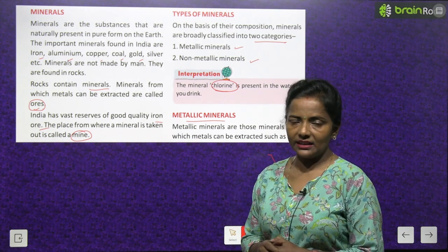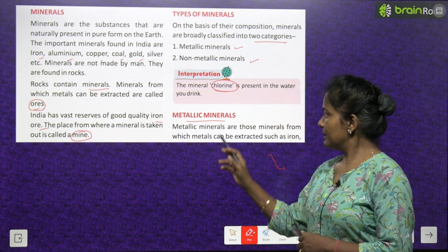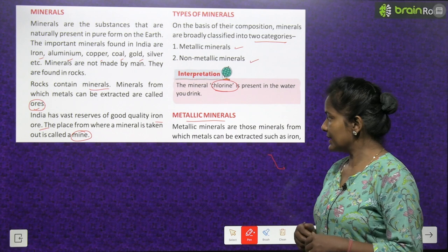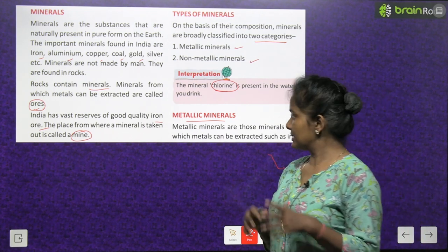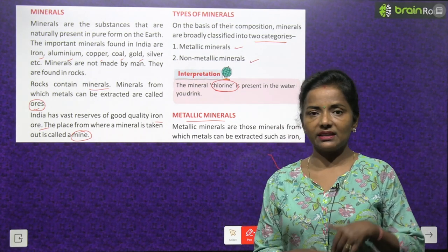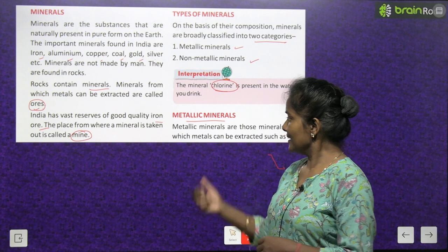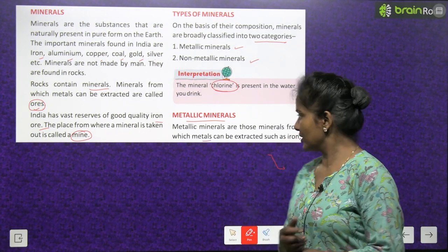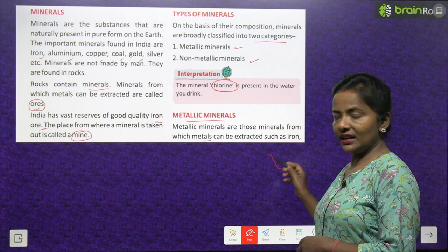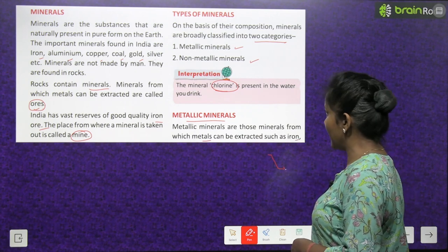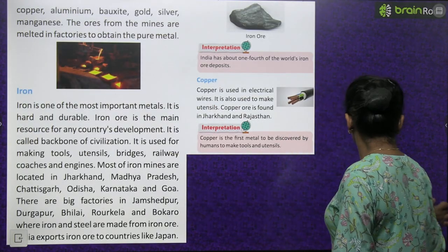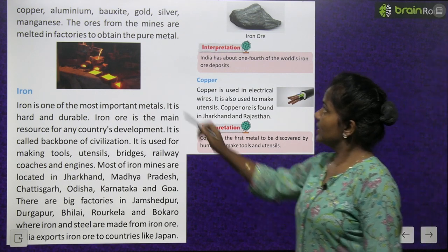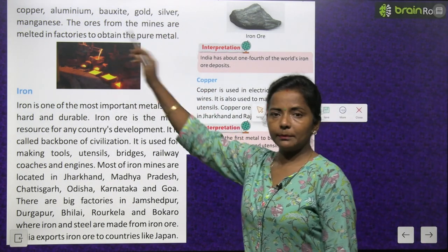Let's read about metallic minerals. Metallic minerals are those minerals from which metals can be extracted — jis mein se metals nikale ja sakta hain. Such as iron, copper, aluminium, bauxite, gold, silver, manganese.